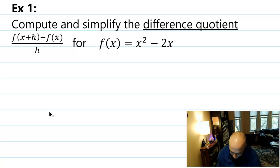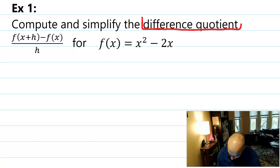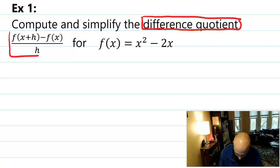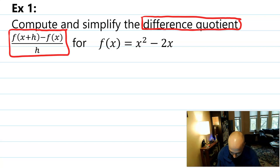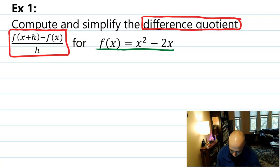The problem says: compute and simplify the difference quotient f(x+h) minus f(x), divided by h. The words 'difference quotient' almost always refer to an equation of this form, and this form is always going to be the same — it's never going to change. The thing that changes in every problem is the function they ask you to compute this for. Today we're going to compute this for the function x squared minus 2x.